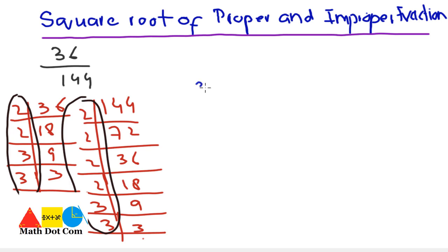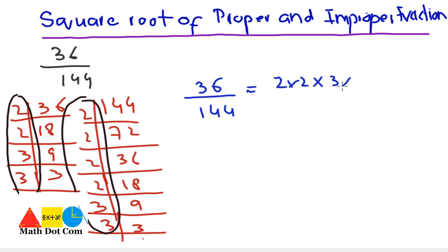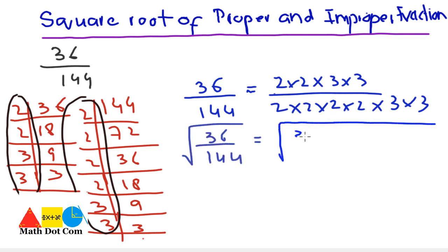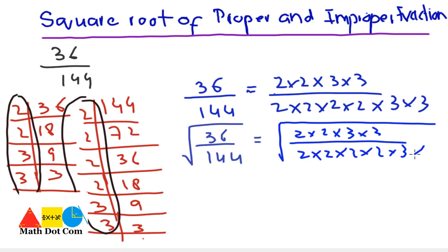Now we write 36 over 144 in the form of prime factors: 2 × 2 × 3 × 3 over 2 × 2 × 2 × 2 × 3 × 3. In step 2, we take the square root on both sides: √(2 × 2 × 3 × 3) over √(2 × 2 × 2 × 2 × 3 × 3).